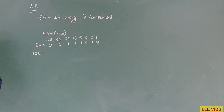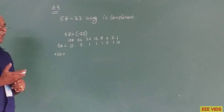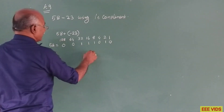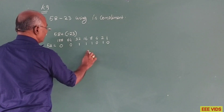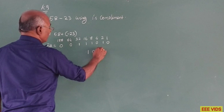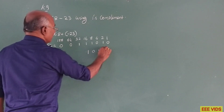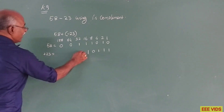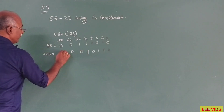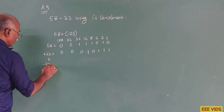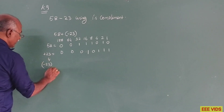We will convert the subtraction to 8 bits. We will represent 23 in 8 bits. 16 added gives 16, plus 4 gives 20, plus 2 gives 22, plus 1 gives 23. We add zeros for the remaining bits. So if we represent minus 23, we will use the one's complement method.